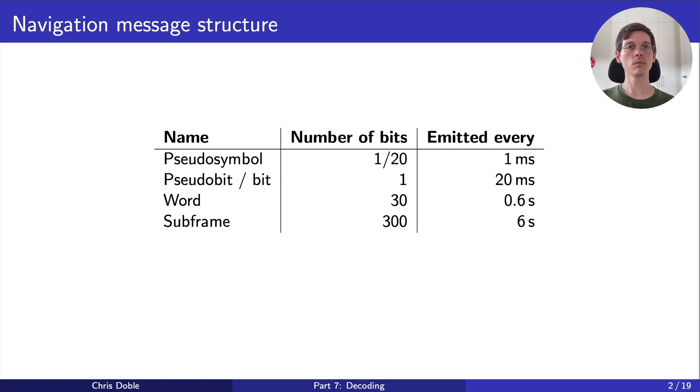And finally, subframes are collected into groups of five to make frames. A frame is a collection of the five different types of subframes. After subframe five of a frame has been transmitted, it starts again at subframe one. The goal of the decoding stage is to decode all of this information and forward it to the next stage, the solving stage, where we use it to calculate our location.